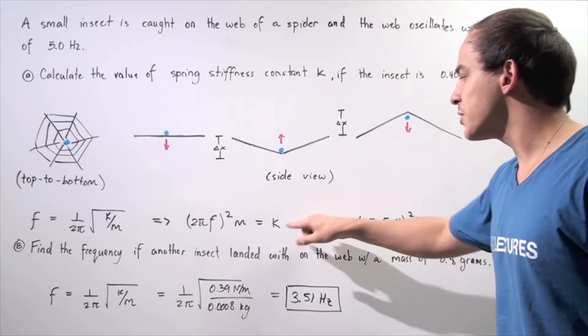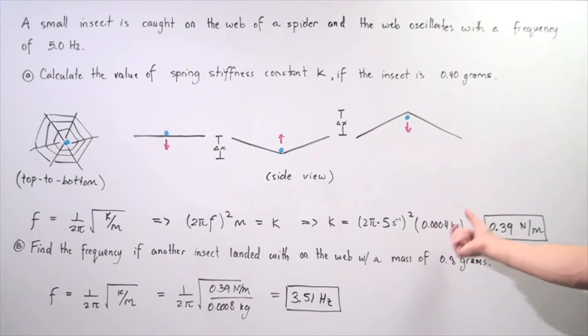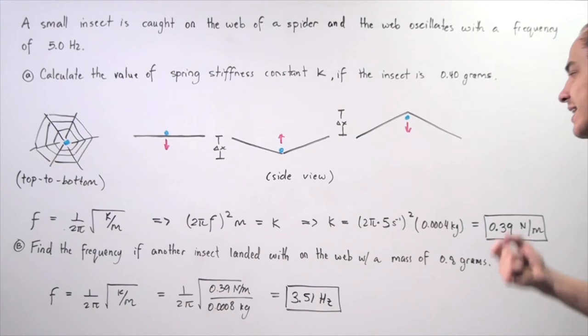So to find the spring stiffness constant k, we take the mass, which should be given in kilograms, so we take this and divide that by 1,000. So we take that and the product of 2π frequency squared,